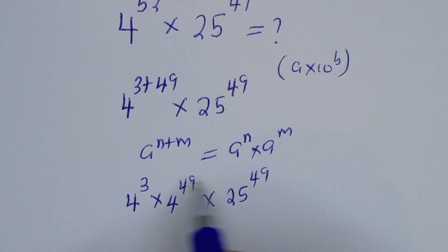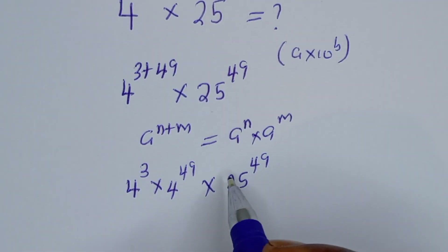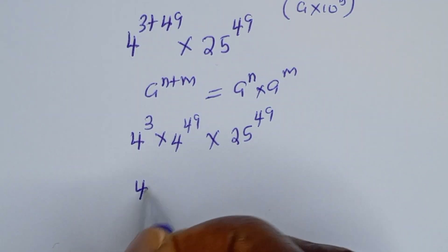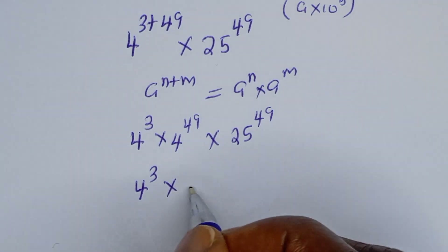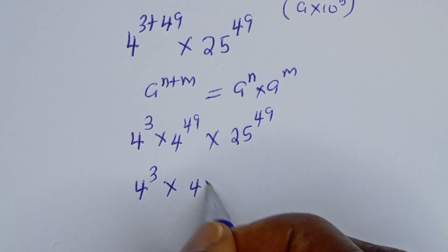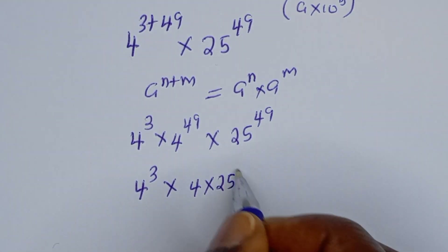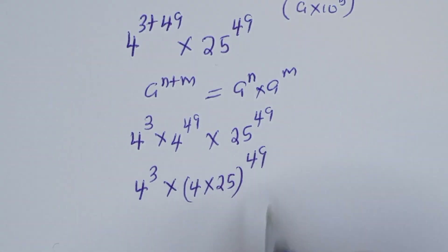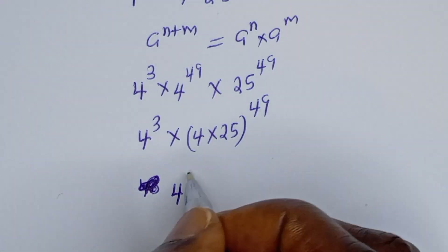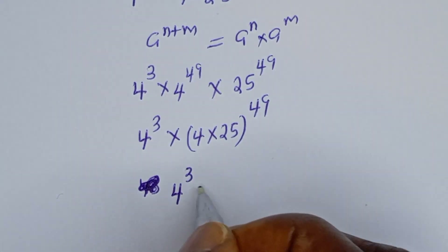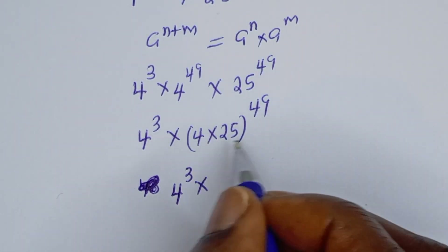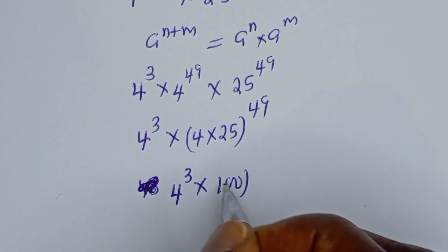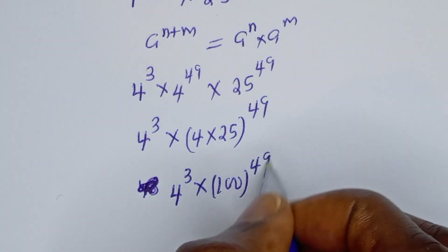Now if you look at these two terms, they have the same exponent. So this can be written as 4 to the power of 3 multiplied by the quantity 4 multiplied by 25, to the power of 49. And 4 multiplied by 25 is 100, giving us 4 to the power of 3 multiplied by 100 to the power of 49.